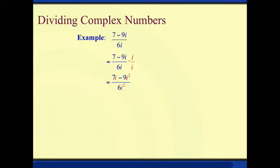So if we simplify the i squared in this fraction, we'll have 7i plus 9 all over negative 6. Now if you'll notice we don't have i in the denominator anymore. So we can have this as an answer.